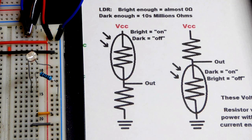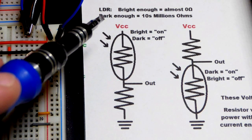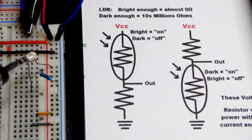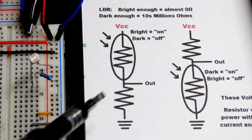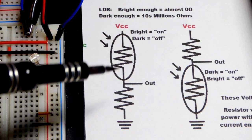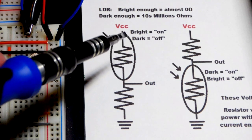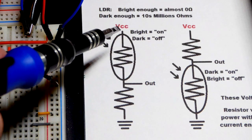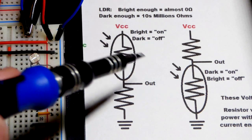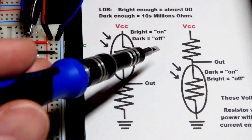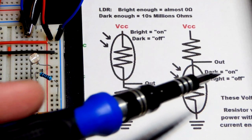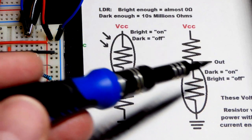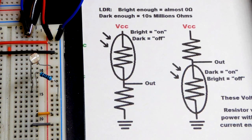The last component we're going to look at for a resistive voltage divider is the light-dependent resistor. Its resistance depends on how much light is falling on its face. If it's bright enough, it gets to almost zero ohms, and if it's dark enough, it gets into the tens of millions of ohms. So we have a varying resistor paired with a fixed resistor. When it's bright in this setup, I'm going to call that 'on' — basically the positive side of the power supply — and when it's dark, I'm going to call that 'off.' For now, we're just going to take multimeter measurements quickly.